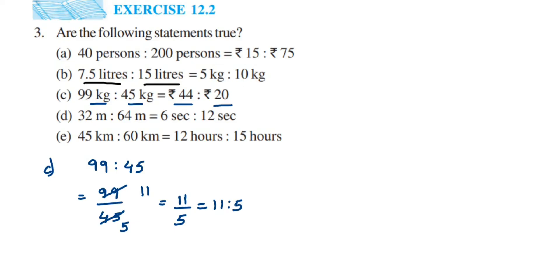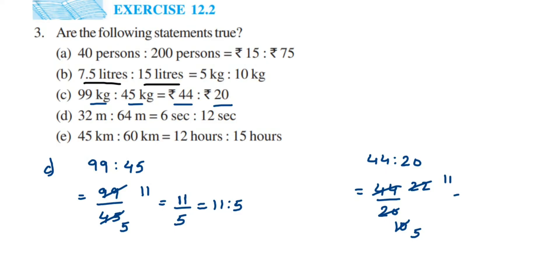The second ratio is ₹44 is to ₹20, so 44 by 20. Cancelling in the 2 table: 2 twenties are 40... then cancel again in 2 table — 2 elevens are 22, 2 tens are 20 — giving 11 by 5. Converting to ratio: 11 is to 5. We got 11 is to 5 and 11 is to 5 — they are equal, so the third statement is TRUE.